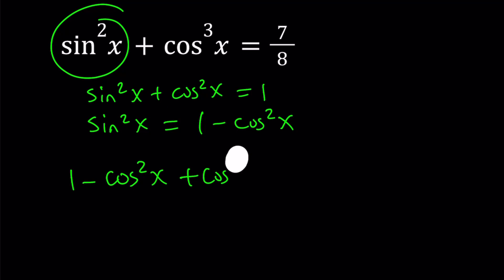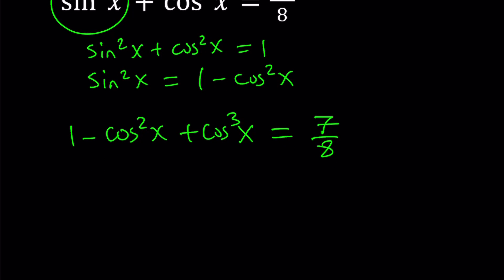So let's go ahead and replace sine squared x with one minus cosine squared x and let's see what happens. Oops, I wrote x squared, but that should be a cube. Now, obviously, what does this look like to you? To me, this looks like a cubic equation. So we're going to deal with a cubic.